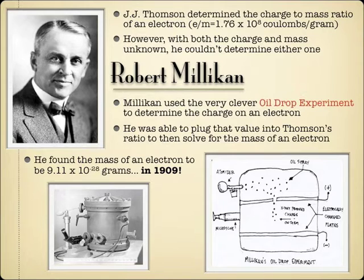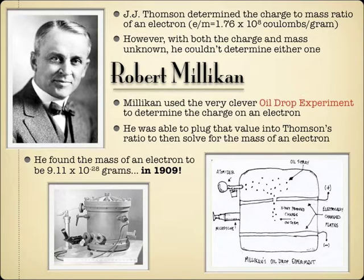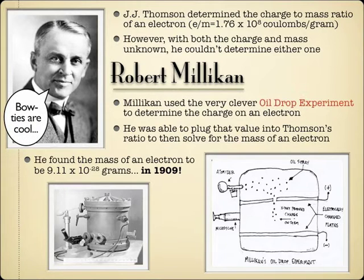Since he knew the charge of an electron, he was able to plug it into J.J. Thompson's relationship and then figure out the mass of an electron. In 1909, that came out to 9.11 times 10 to the negative 28 grams. That's just one of the really amazing things about science — I could put you in a laboratory, leave you there for a year, and say somebody did this, find the mass of an electron. You'd be hard-pressed to do that, thinking about the limits of a modern balance. But by measuring the charge and then back-calculating the mass, Robert Milliken was able to come up with a very accurate measurement of the mass of an electron. Hats off to Robert Milliken — must be the bow tie.